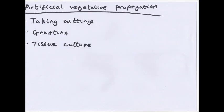Artificial vegetative propagation has three main types: taking cuttings, grafting, and tissue culture. Cuttings are simple — you cut a piece of plant and it can grow. It doesn't work with all plants, but you cut it between leaf nodes and it can be treated with plant hormones to encourage root growth.